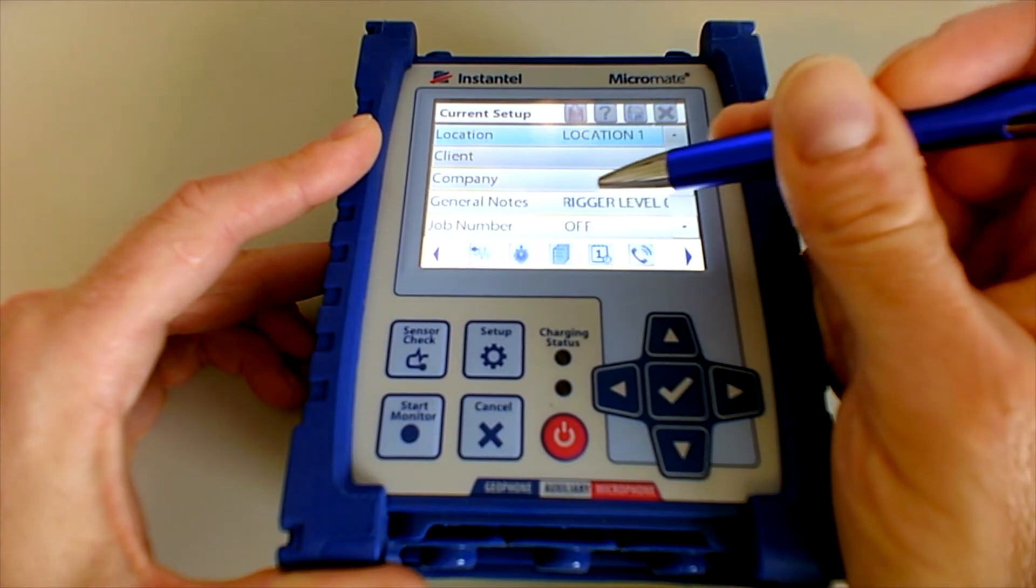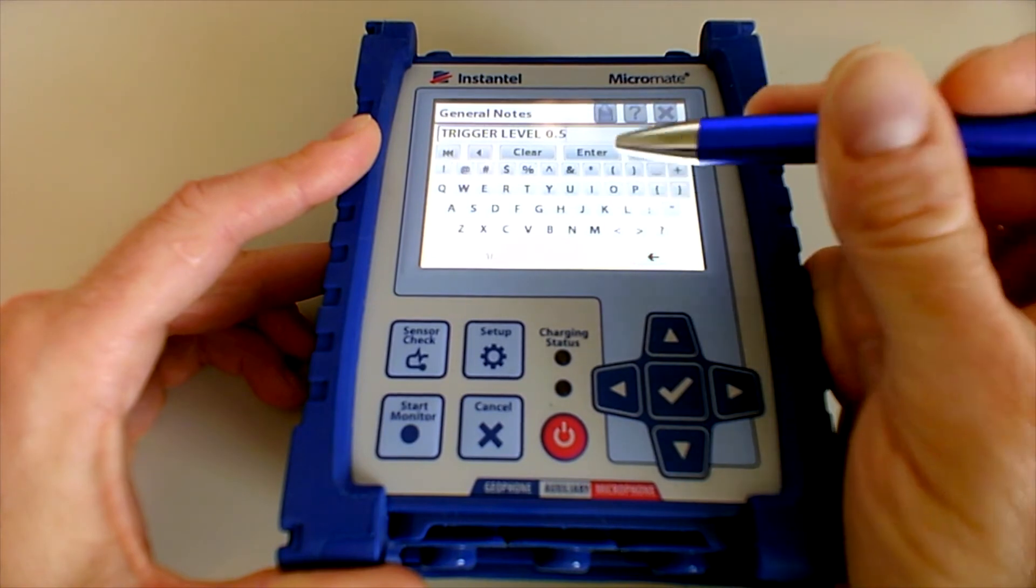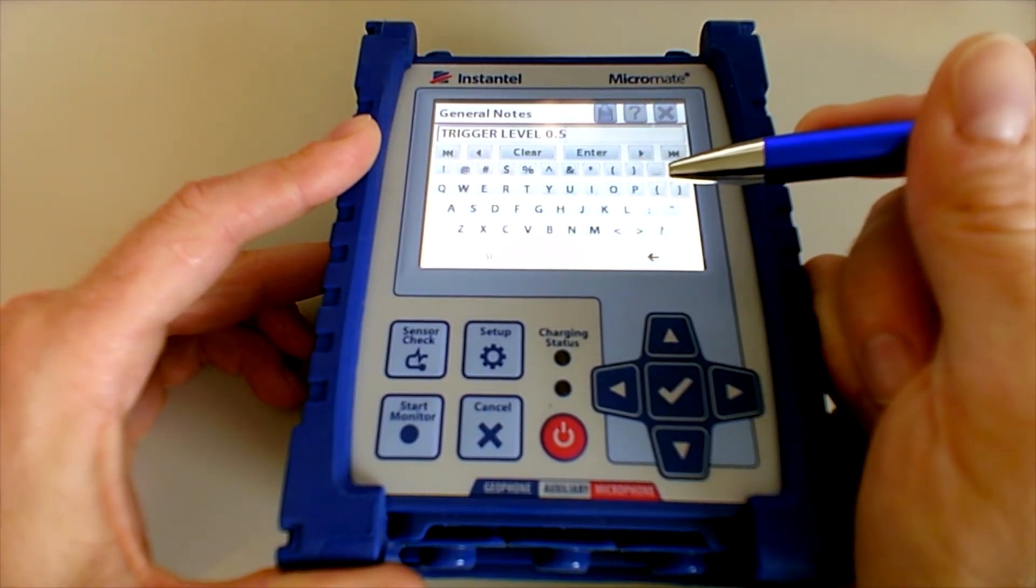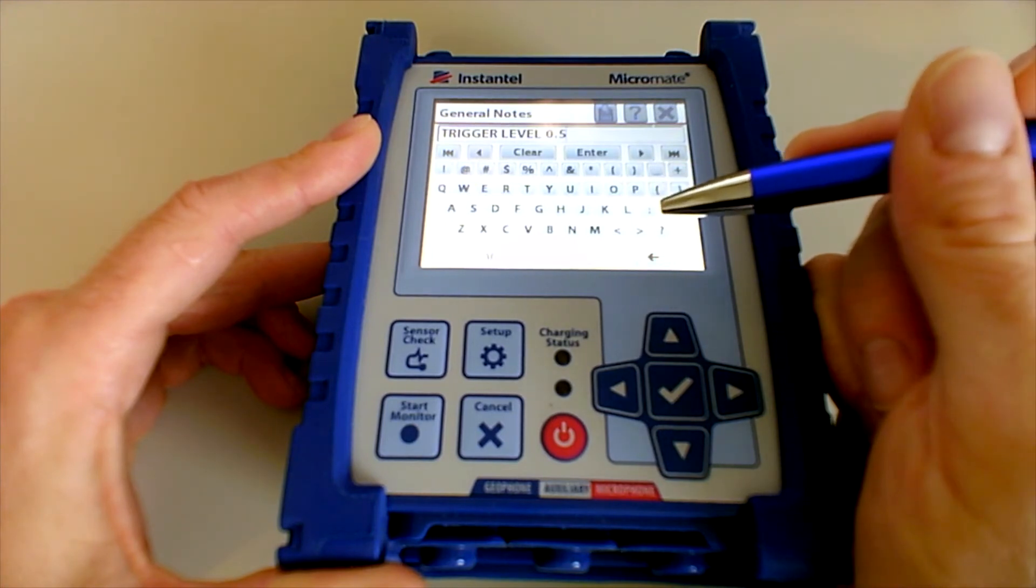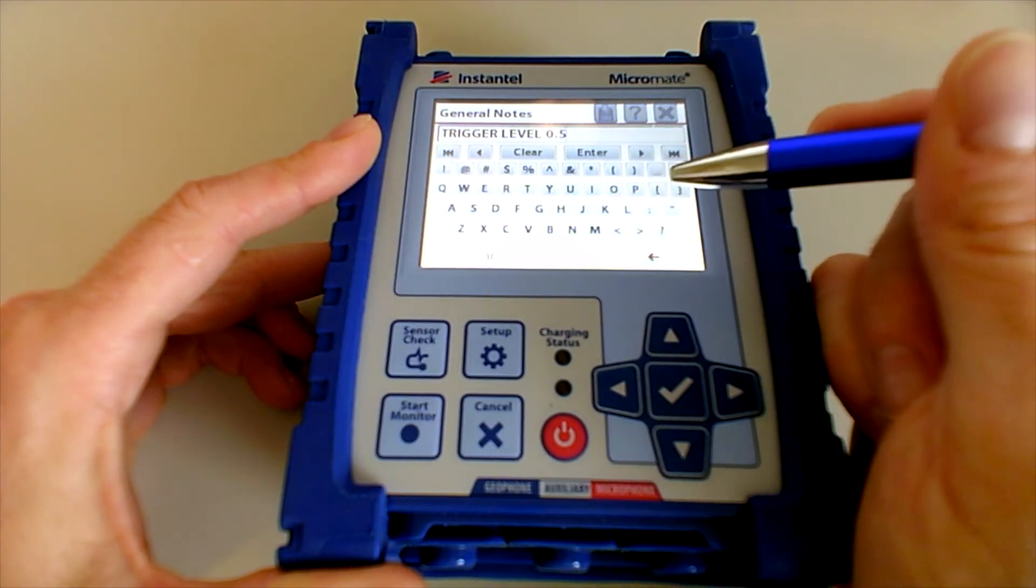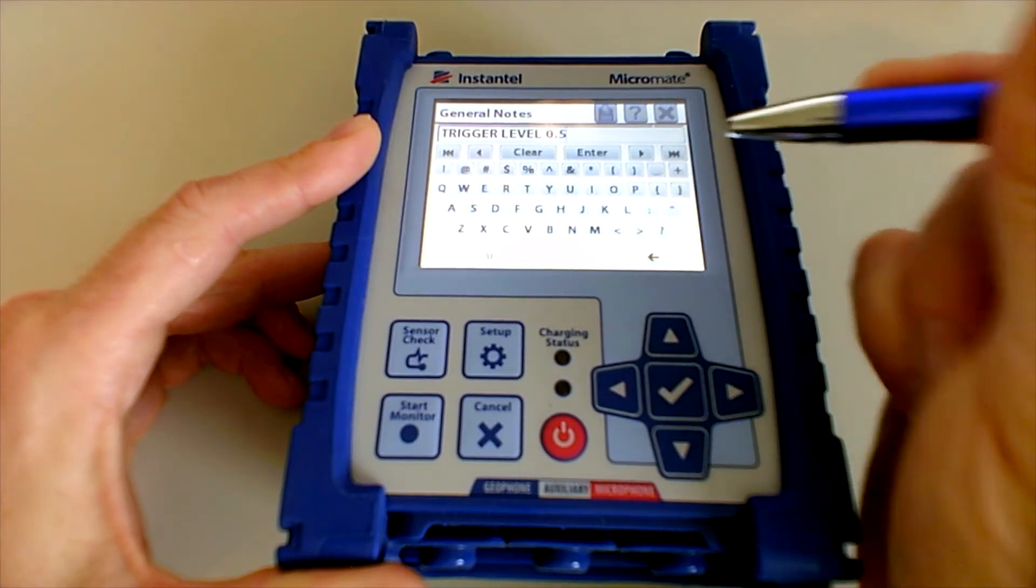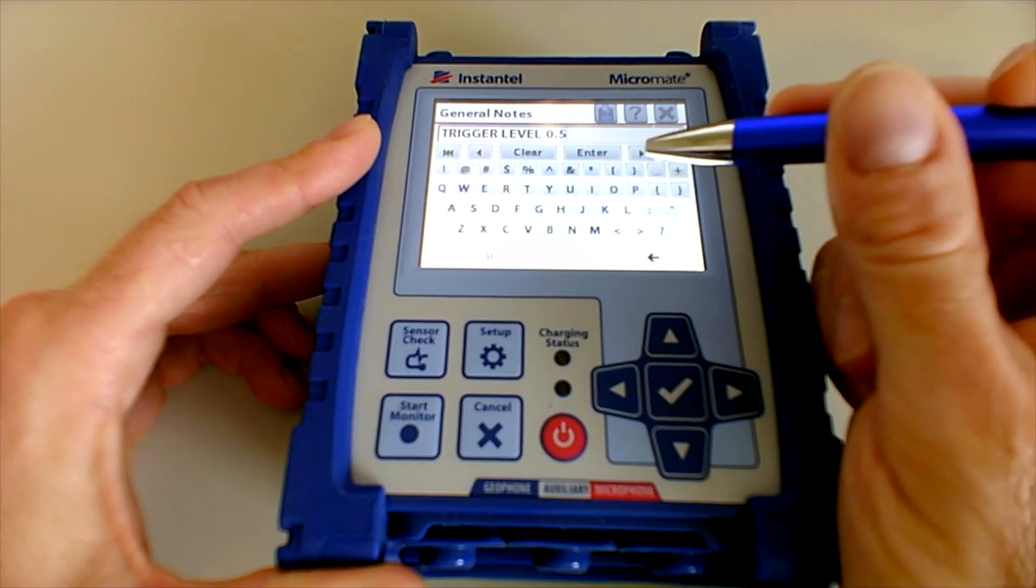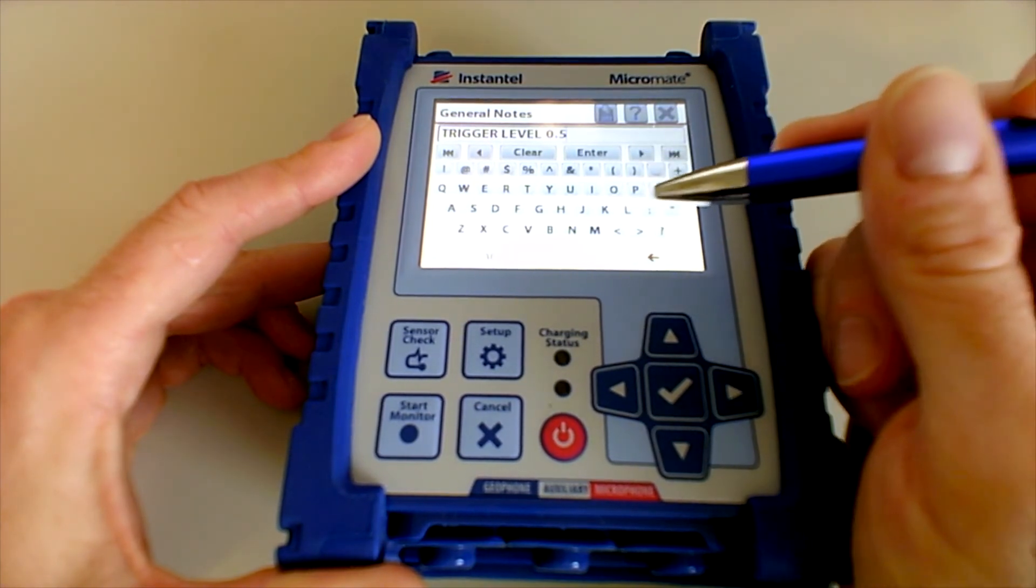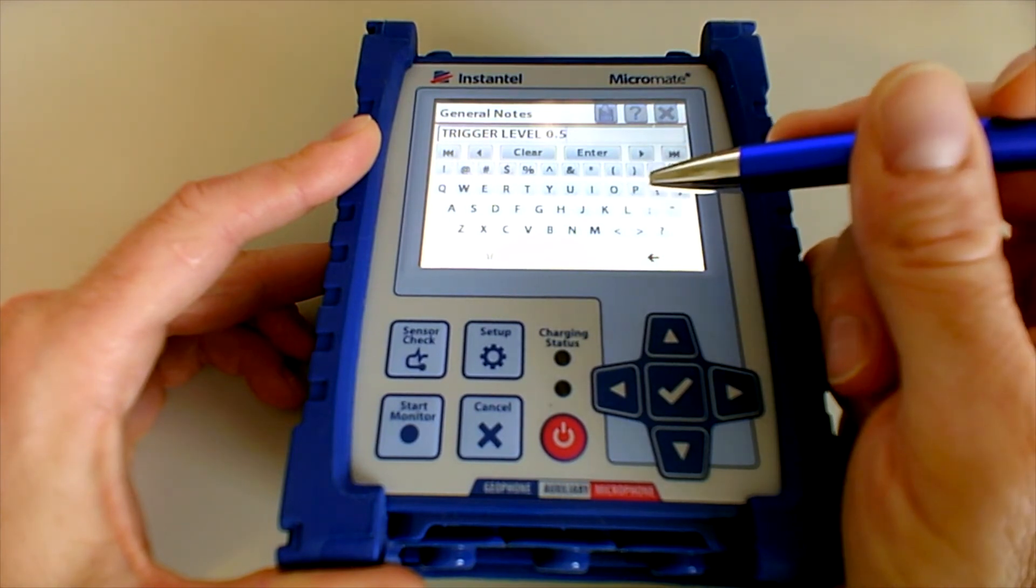General notes down here, again, you can leave this blank or you can use it. Some things that people use the general notes for, in this case, we used it to identify the trigger level for this project. That way, the trigger level is listed on your event report. So whether it's 0.5, 0.25, whatever it happens to be, you'll be able to see on your event report what your trigger level was. If you have an interest in doing that, other people will sometimes put the GPS coordinates of the seismograph into that space.